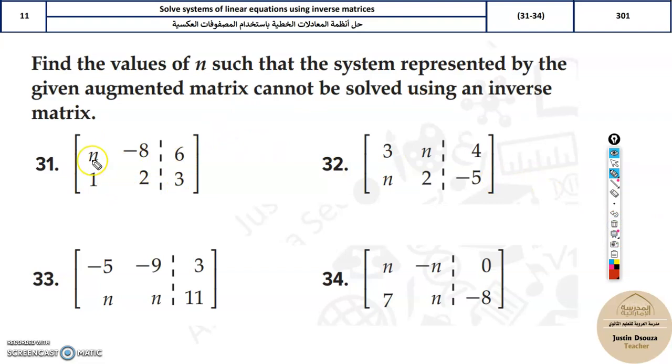There are many methods. The easiest is to find the determinant by multiplying the diagonals. If you've forgotten determinants, go back to video number 2. It will be n times 2 minus negative 8, which equals 0. So now you can easily solve it.